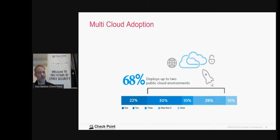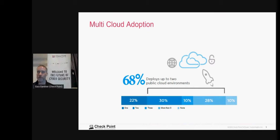We found that 59% of organizations are going to increase their cloud security budget over the next 12 months. On average, organizations are dedicating around 27% of their overall IT budget to cloud security. We're also seeing them deploying to multiple cloud vendors — not just one — whether that's infrastructure as a service, platform as a service, workloads, or software as a service.